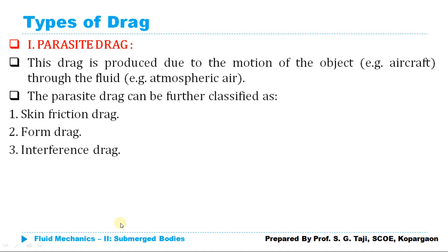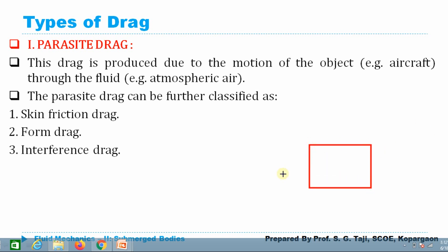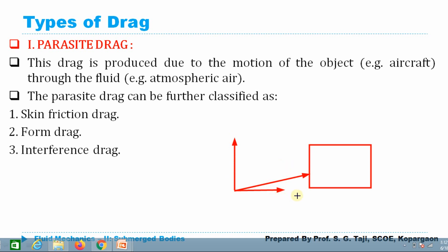As we have discussed previously, when any object is submerged into the liquid it will be subjected to certain forces exerted by the flowing fluid. If I resolve that total force into two components — one acting in the direction of motion and another acting normal to the direction of motion — then the vertical component acting normal to the direction of motion is known as lift force, and the component acting in the direction of motion is known as drag force.